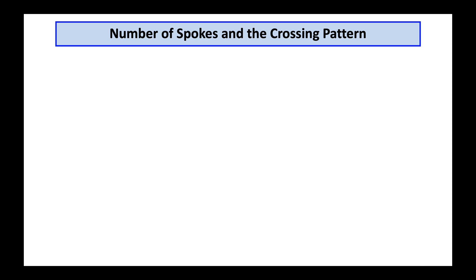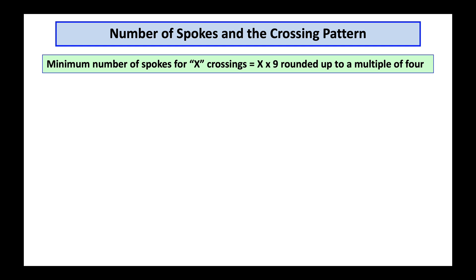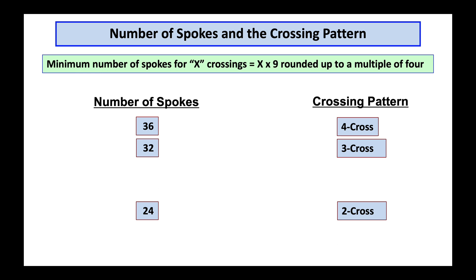From the very basics about the number of spokes and crossing patterns we get the following. The minimum number of spokes for x crossings where x is an integer one two three or four is x times nine rounded up to a multiple of four. So if I have 36 spokes in the wheel I can do a four cross but I probably do a three cross. With 32 spokes the standard would be a three cross. With 24 spokes a two cross. Which leaves the case of 28 spokes. I can do a three cross, I can do a two cross. I would suggest to you that in most cases with 28 spokes a three cross is going to be best.